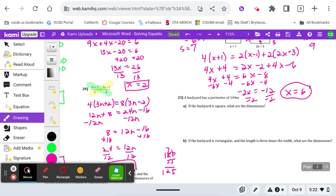Backyard has a perimeter of 144. If the backyard is square, what are the dimensions? So 4 side lengths, we don't know what that length is, equals 144. So the side lengths are each 36.